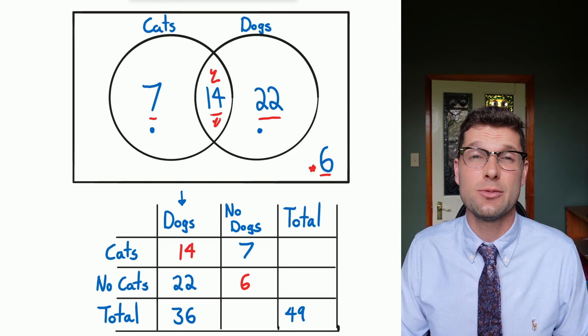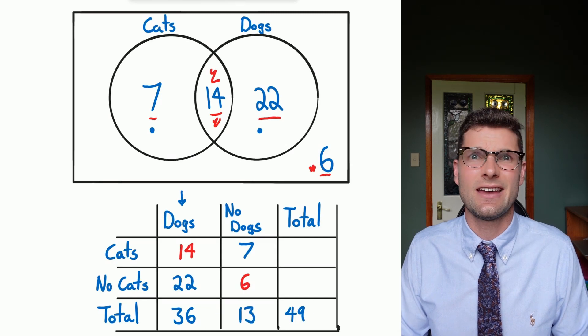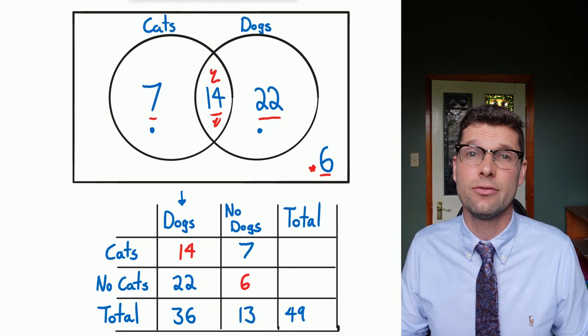And again the best thing about these two-way tables is you just have to make sure they add up correctly. So seven plus six is 13, that goes straight there. I know I've got 13 people that don't have a dog.